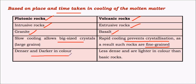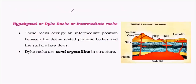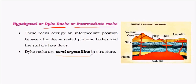Rocks that cool below the earth's crust are much denser and darker in color, mainly due to the presence of iron oxides. Volcanic rocks are less dense, lighter in color, and basic in nature, whereas plutonic rocks are acidic in nature. Those rocks which cool between plutonic and volcanic conditions are called intermediate or dike rocks, which form structures like sills, dikes, laccoliths, and batholiths. Their crystal size is intermediate to that of plutonic and volcanic rocks.